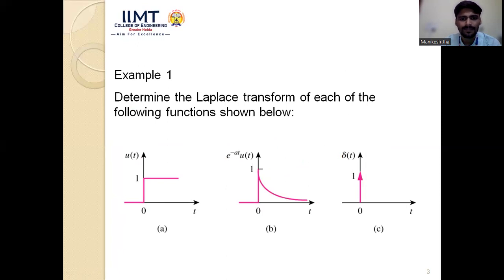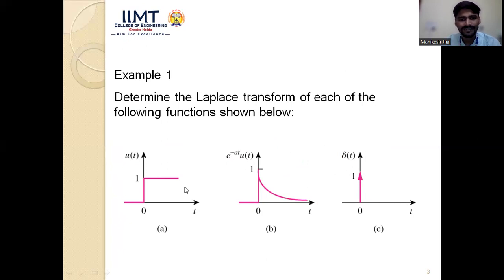Now we are going to take some examples. The first signal is u(t), the unit step signal. The next signal is e^(−at)·u(t), the decaying exponential. The third one is δ(t), the impulse signal. We will discuss what the Laplace transform is for each of these three signals.